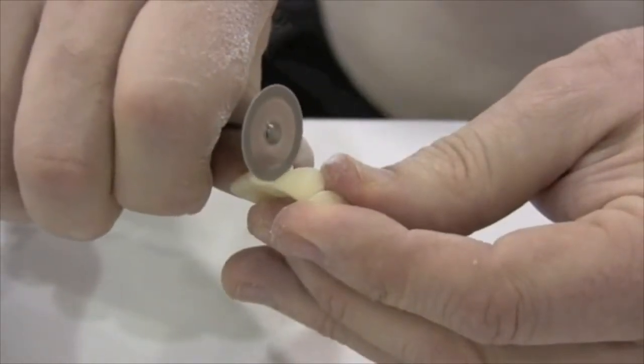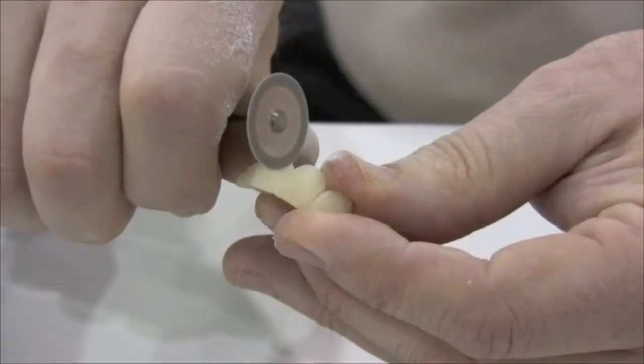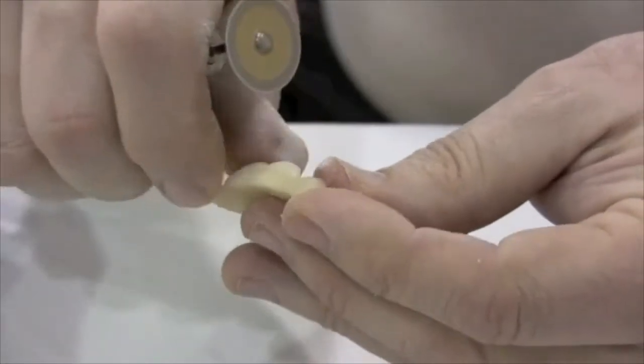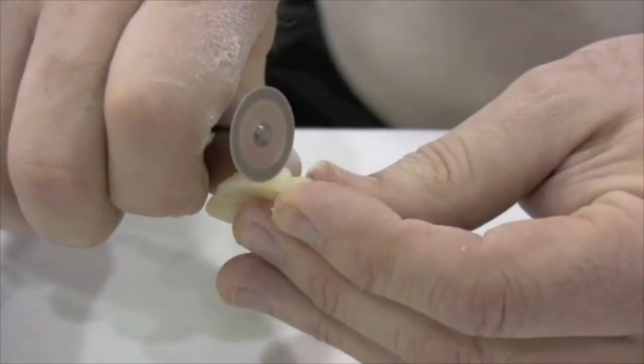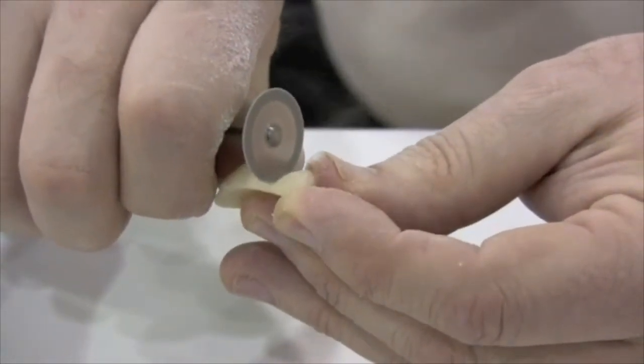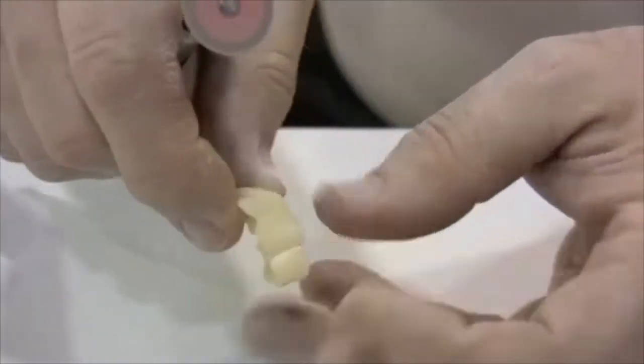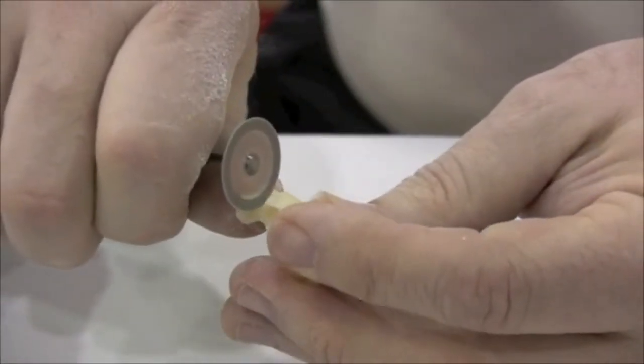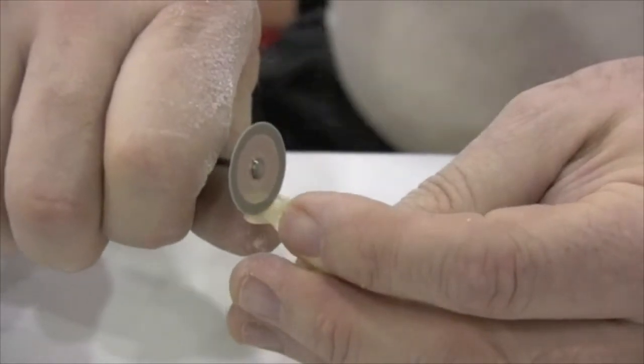Sometimes bisacryls can get a little gooey and sticky when they're in the presence of the heat generated by the burr or handpiece. Again, this material behaves a little bit more like traditional methyl methacrylate in that respect.